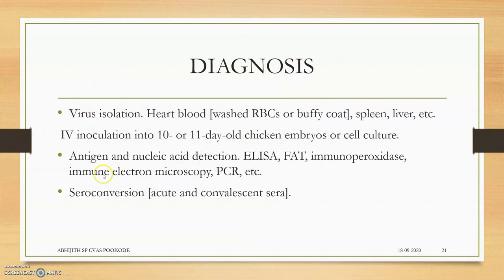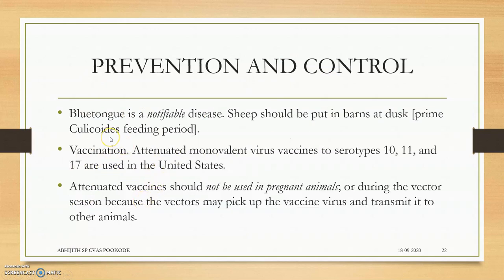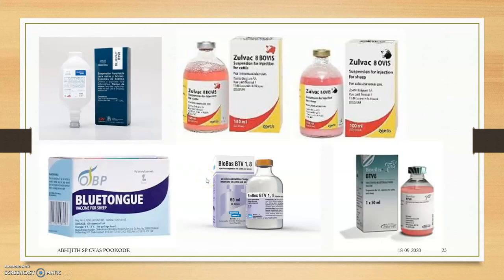Diagnosis involves virus isolation, antigen and nucleic acid detection, and seroconversion. Blue Tongue is a notifiable disease. Sheep should be kept in barns at dusk because that is when Culicoides feeds. Vaccinations are available in many countries according to serotype, but vaccines are not used in pregnant animals because they create many problems.